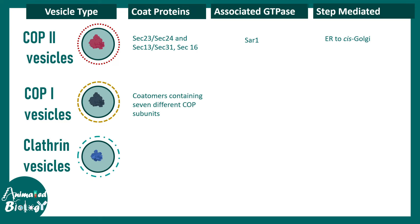COP1 coated vesicles have COPI/coatomer proteins with seven different COP subunits, making them more complex. The GTPase here is ARF GTPase, and these vesicles mediate retrograde cis-Golgi-to-ER transport.